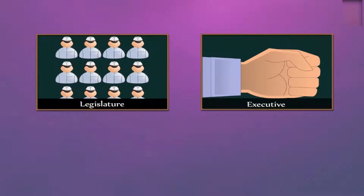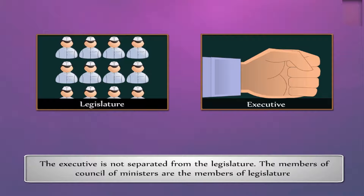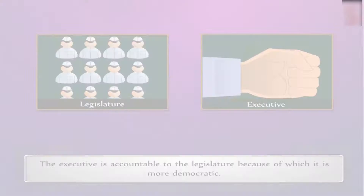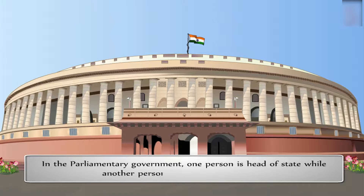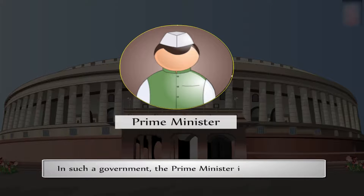Let us compare our Constitution with that of America. In the parliamentary form of Constitution, as proposed for India, the executive is not separated from the legislature. Members of the Council of Ministers are members of the legislature, and the executive is accountable to the legislature, making it more democratic. In a parliamentary government, one person is head of state while another is head of government, and the Prime Minister is most powerful.